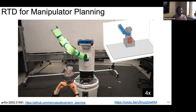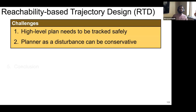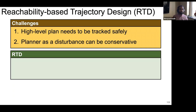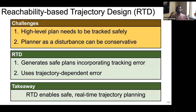That covers everything mathematically. The key challenge in motion planning is that you want to plan quickly with a simple model for a high-level plan, but you have to track it safely without treating the planner as a disturbance — which would be so conservative the robot never does anything. By incorporating trajectory-dependent tracking error, we can reduce conservatism. If you take nothing else away: RTD is a way to do safe, real-time trajectory planning.